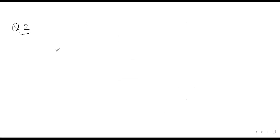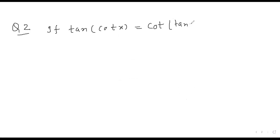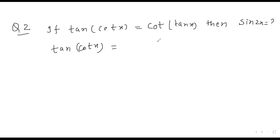Question number 2: if sin x equals 4 of sin x, then sin 2x equals what? We can write it as tan of cot x, and since cot(90° - θ) = tan θ, we can write it as tan(π/2 - x).